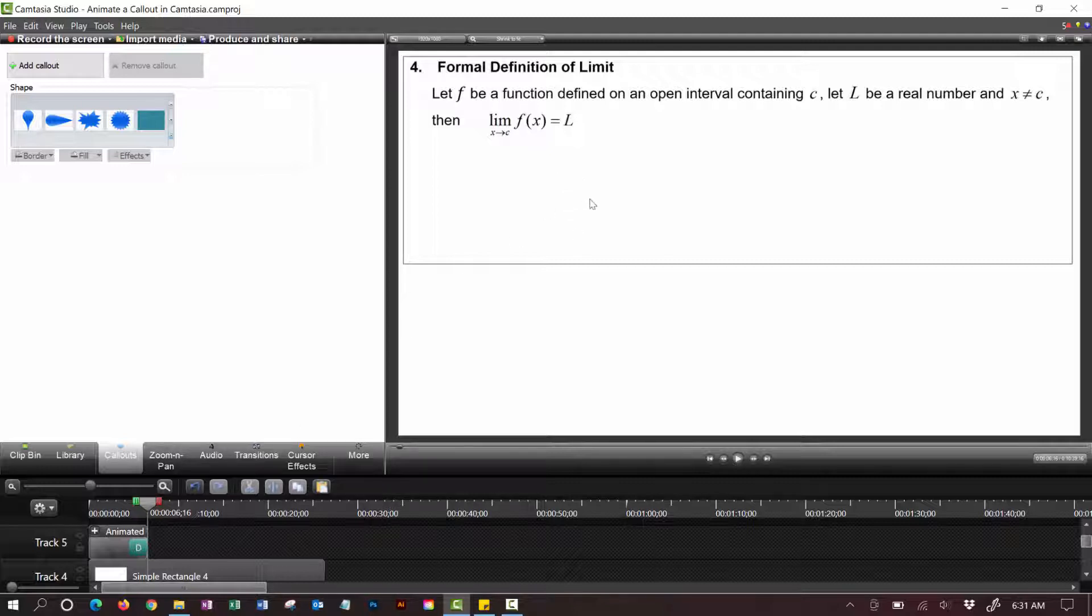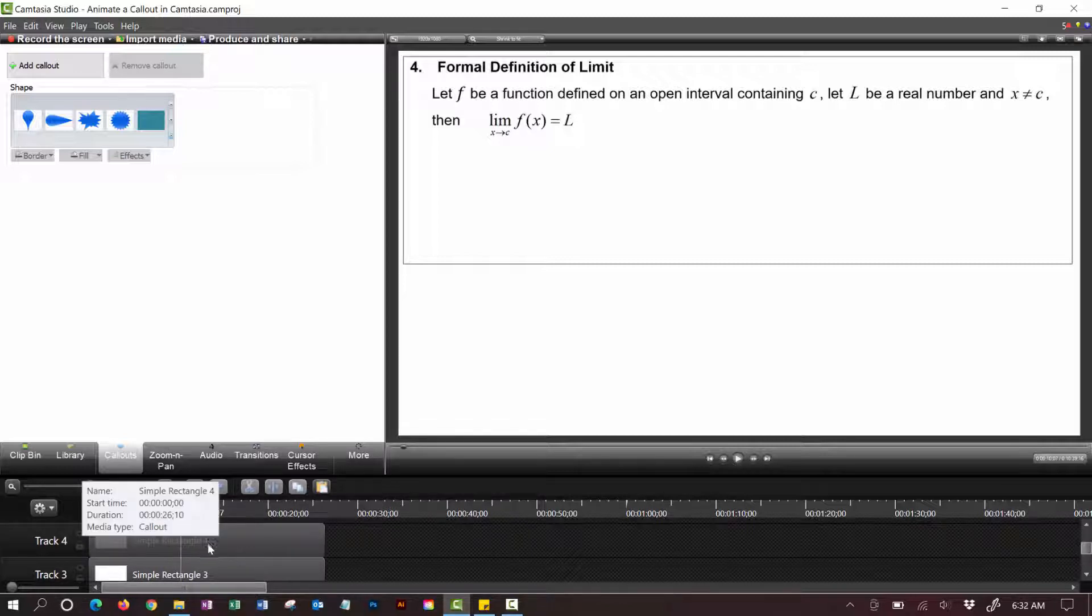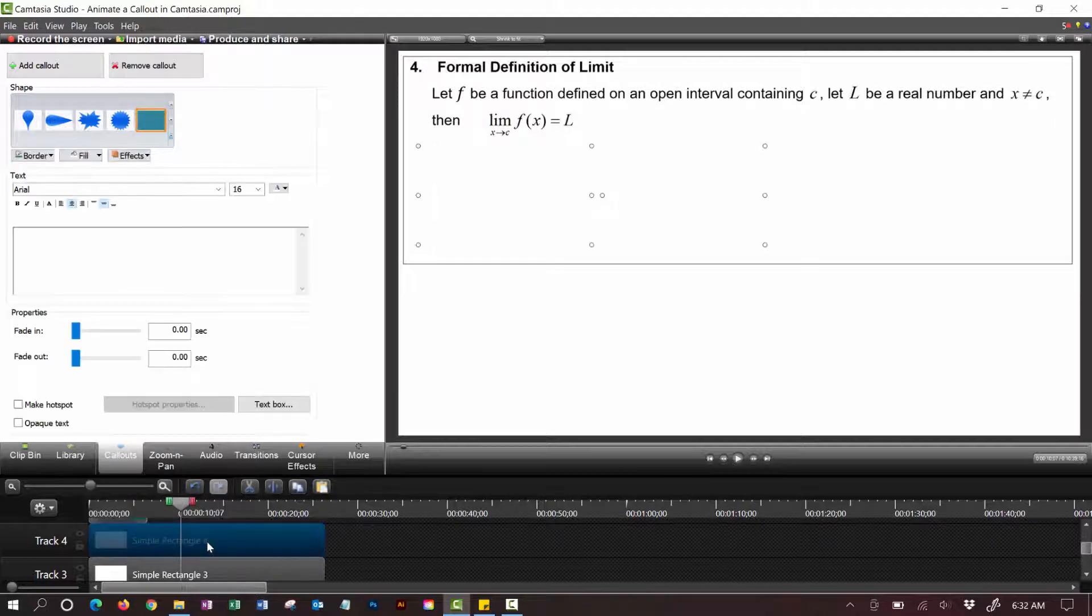I can reveal all of it or just some of it so I can reveal all of it by just clicking on the box and I can put a fade out in right here. And I change the fade out time to say one second.